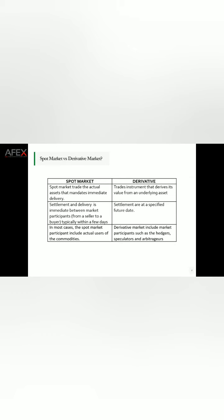The key differences between spot markets and derivative markets: in the spot market you trade the actual assets, and delivery is required immediately between buyers and sellers. In the derivative market, you're trading an instrument that has derived its value from an underlying asset — you're not trading the actual asset itself, but a contract developed around it. Settlement in the spot market is near real-time — at T+1, T+2, or within a few days. In the derivative market, settlement is at a specified future date.